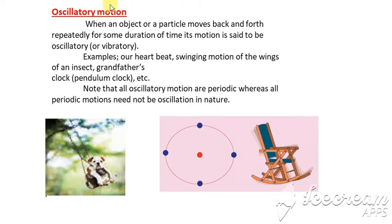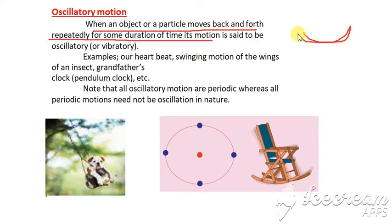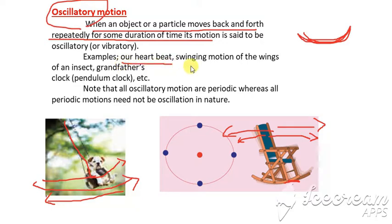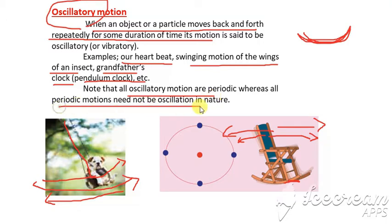Oscillatory motion is when an object or particle moves back and forth repeatedly for some duration of time. For example, a swing moves front, then backward, then front again — this is oscillatory motion. Similarly, a rocking chair, the heartbeat, the swinging motion of wings of an insect, and a grandfather's pendulum clock are all examples of oscillatory motion.